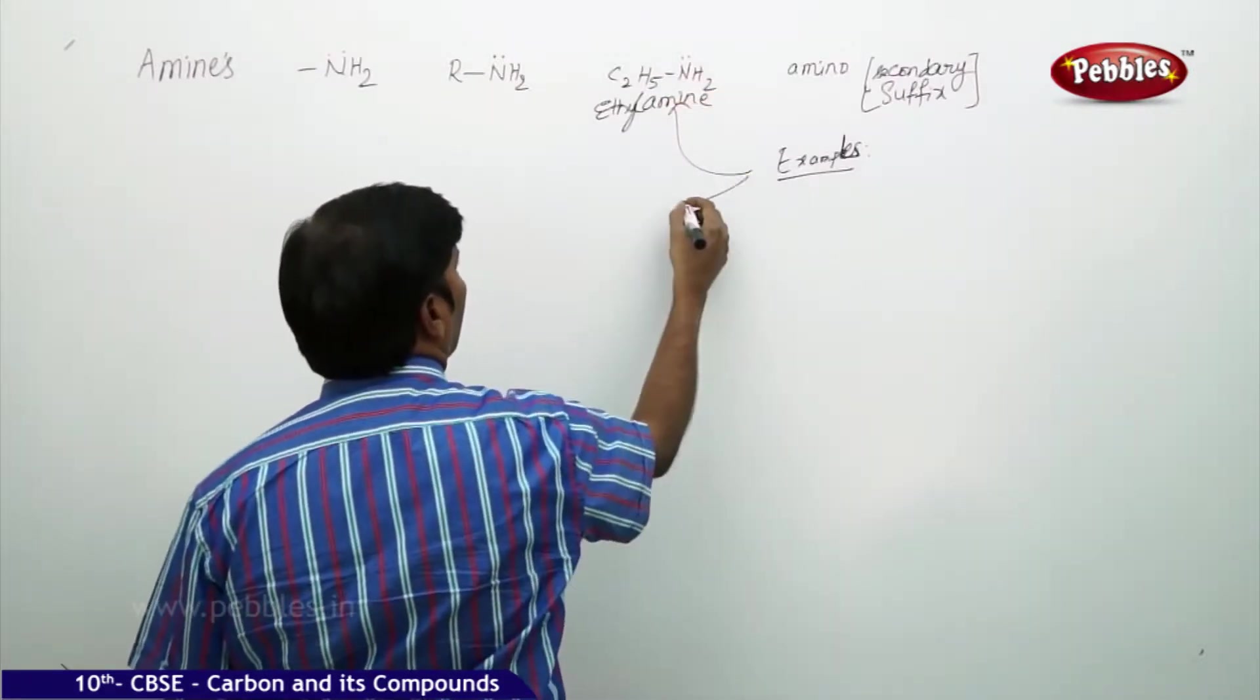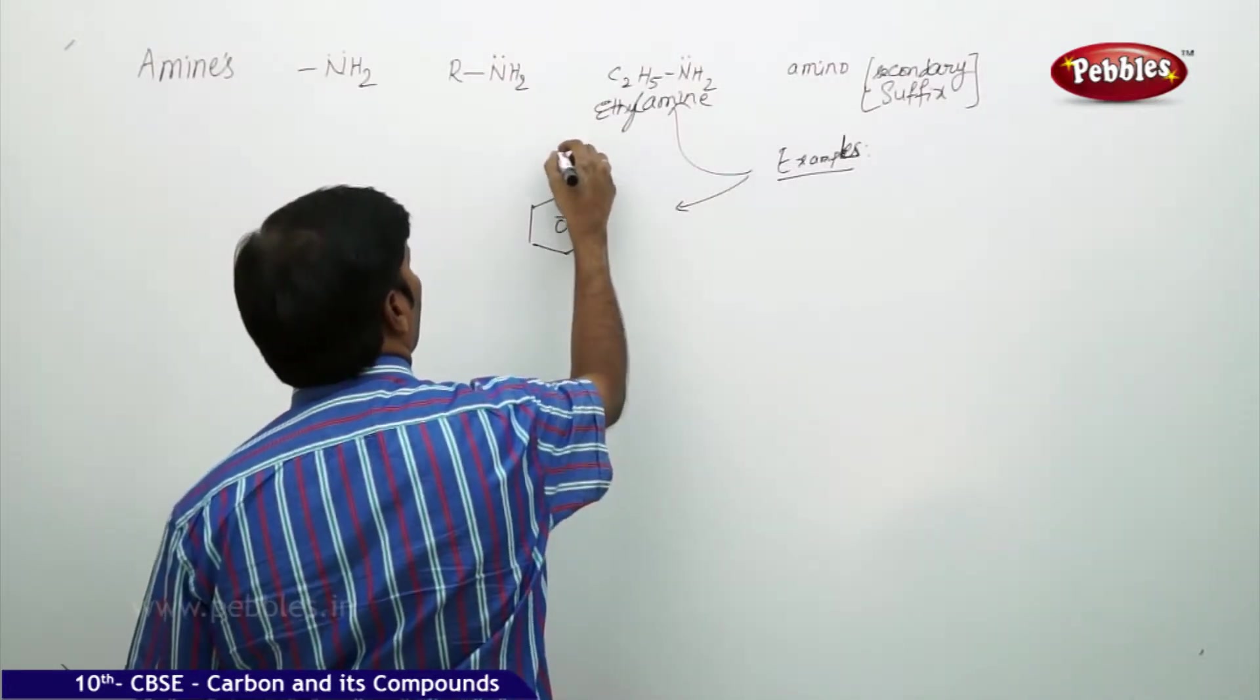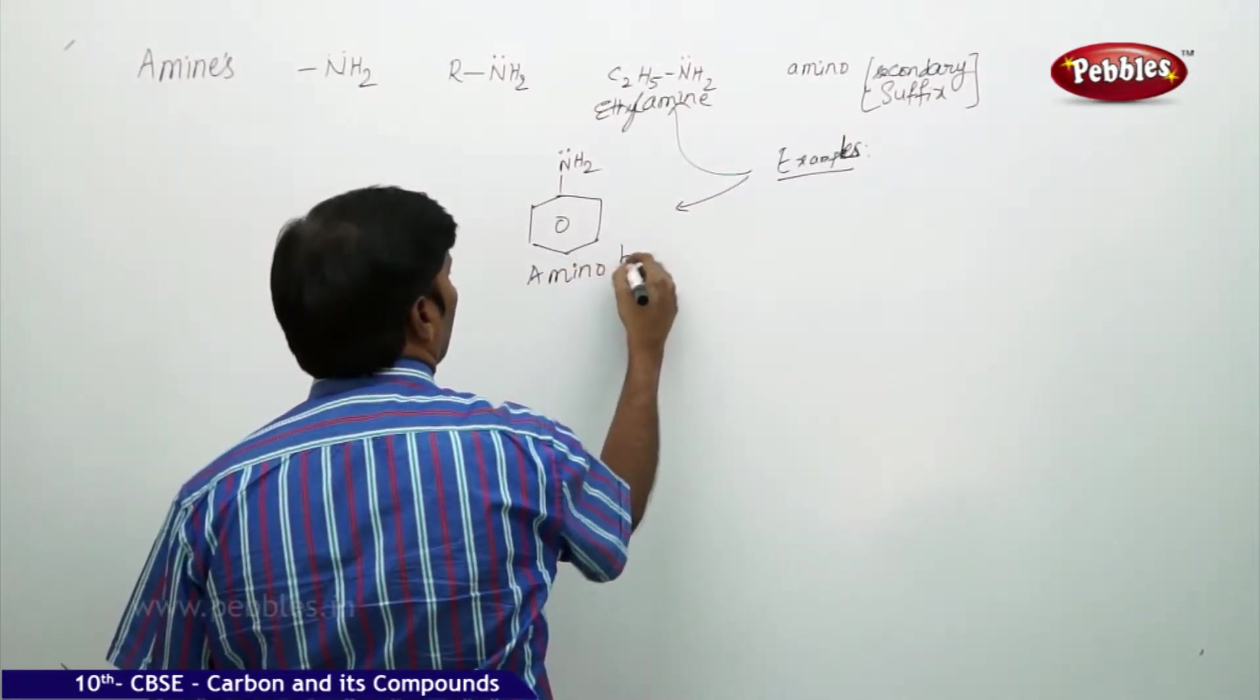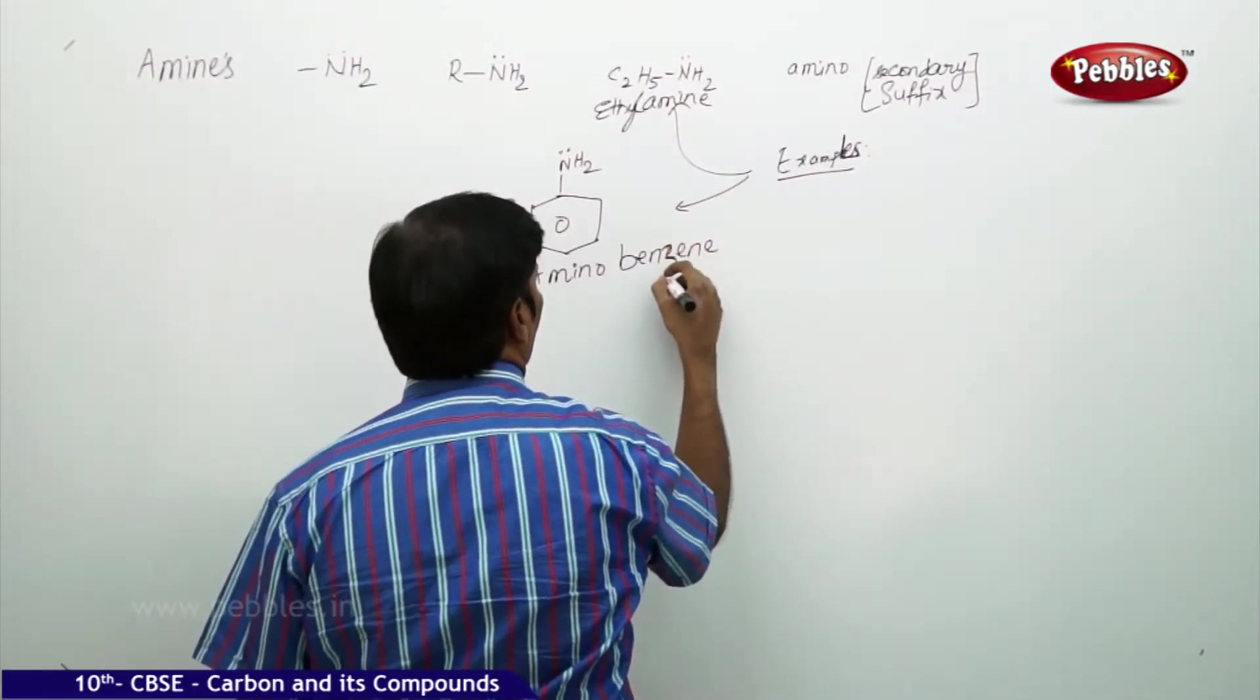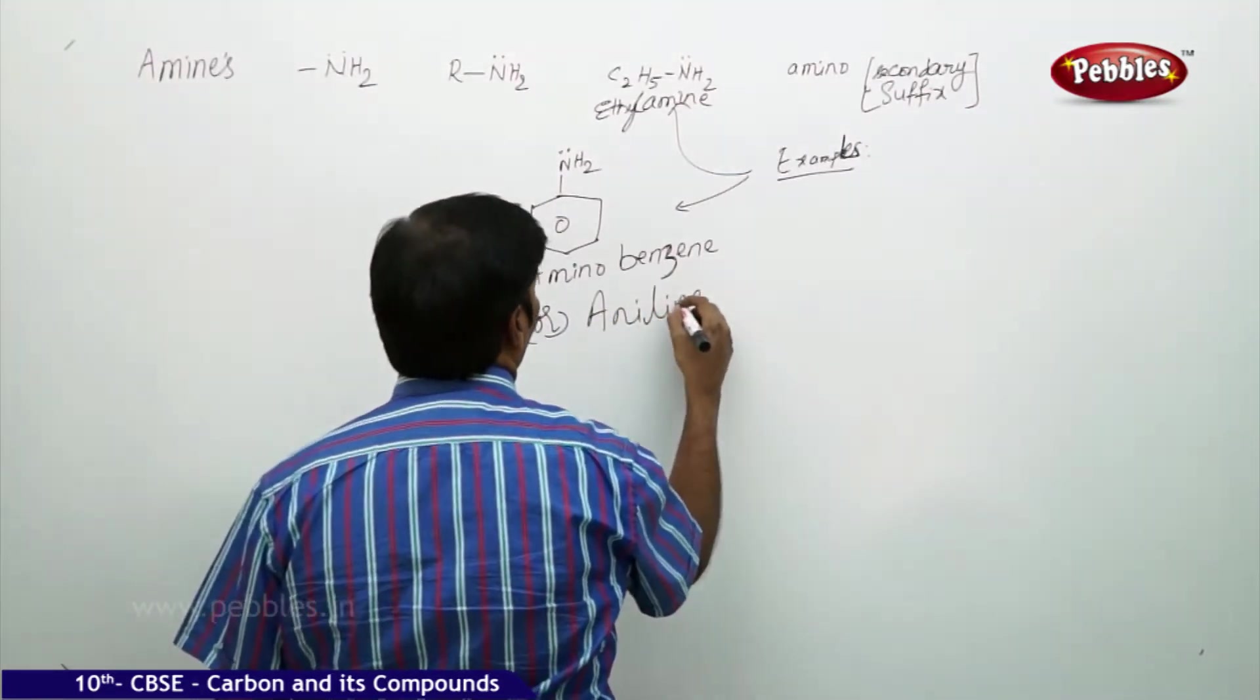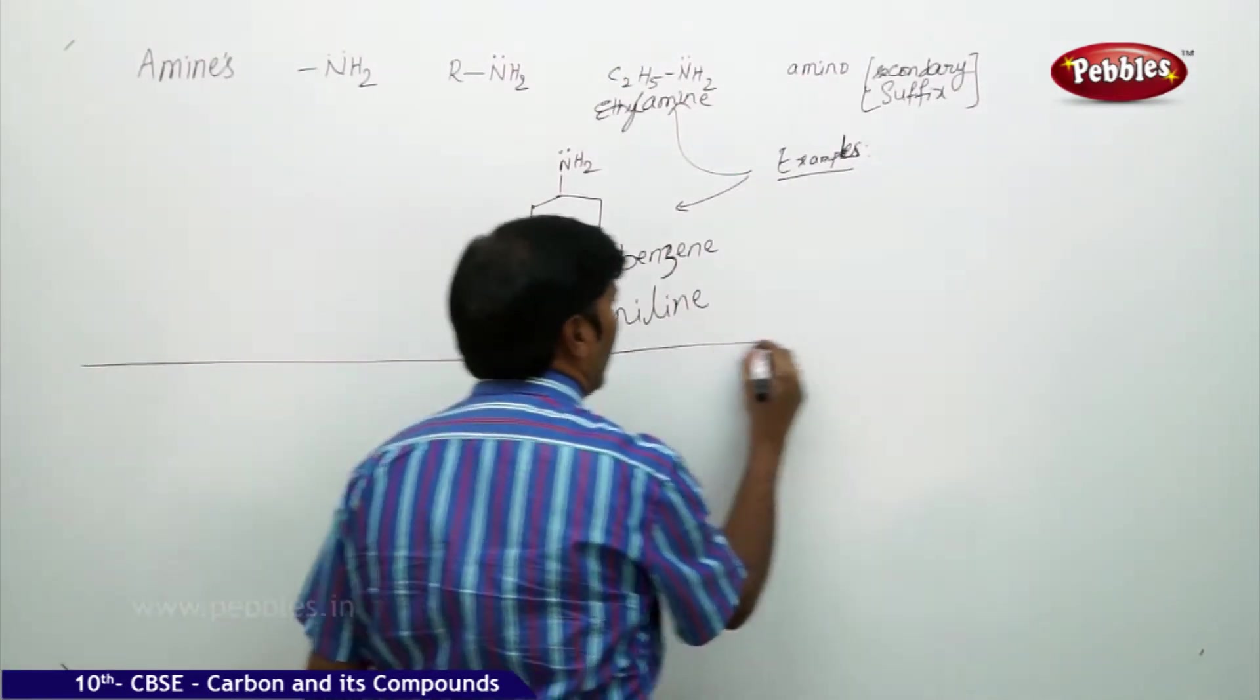You can even take a few more examples. This is called aminobenzene, or sometimes you can also call it as aniline. So this comes under the class of compounds called amines.